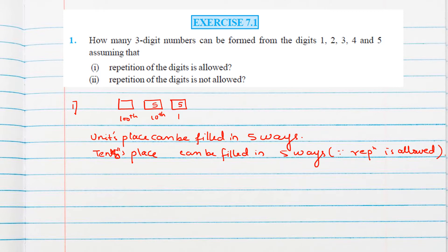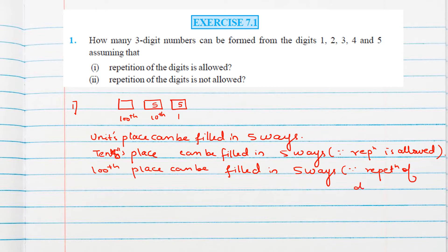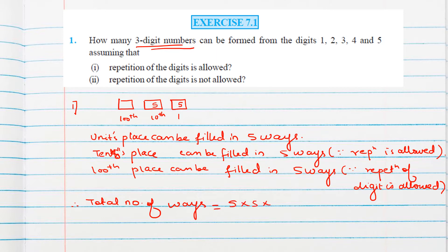Similarly, the hundreds place can also be filled in five ways, for the same reason — repetition of the digit is allowed. Therefore, the total number of ways to form the three-digit number will be 5×5×5, that is 125 ways.